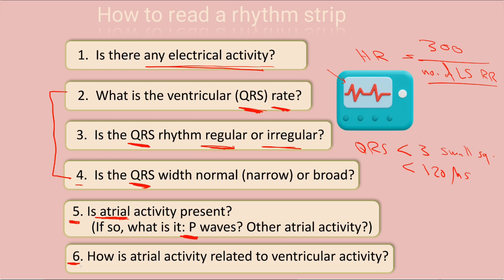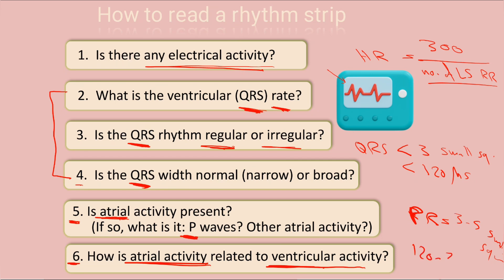The sixth question: what is the relation between the P wave and the ventricular activity? This refers to the PR interval, which should be between three to five small squares, or 120 to 200 milliseconds.